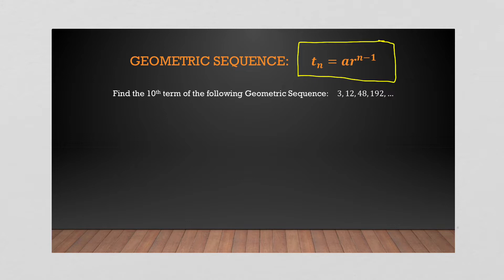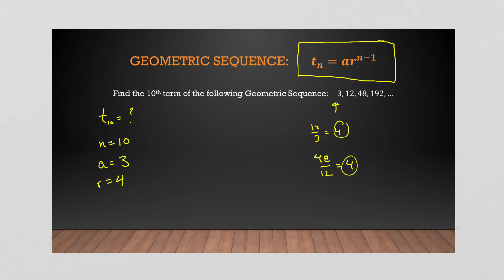We want to know the tenth term, so t₁₀ means n is 10. We know a is three — that's our first term. What's the ratio? Well, 12 over 3 is 4, and 48 over 12 is 4, so our common ratio r is 4. We plug in: tₙ = a · r^(n−1), so the tenth term equals 3 times 4 to the power of ten minus one, which is 3 times 4⁹. Remember, we do exponents first.